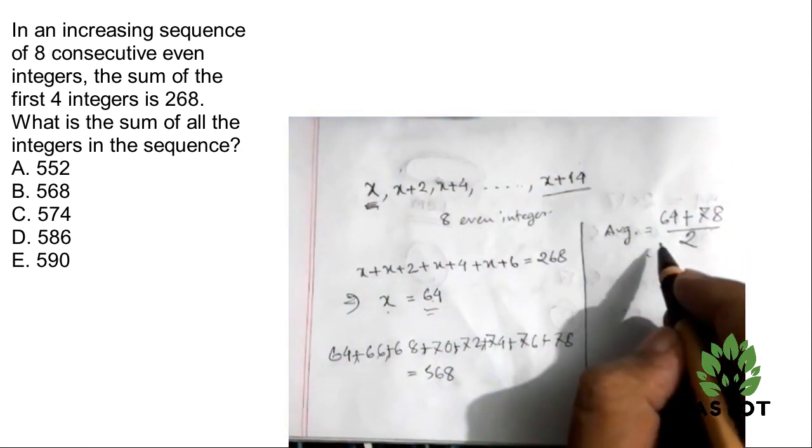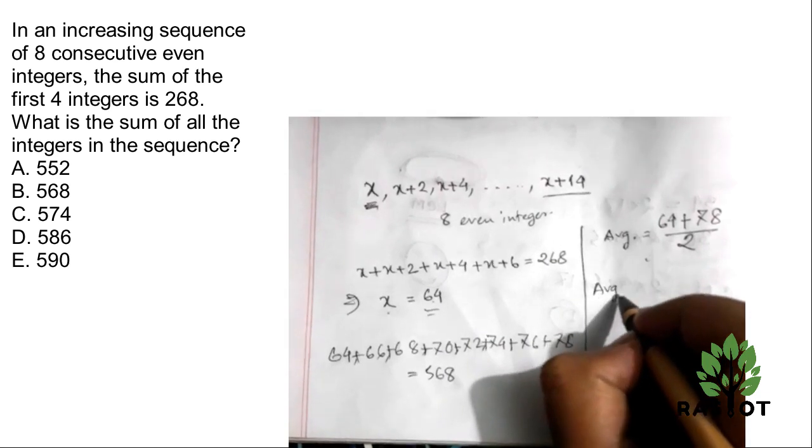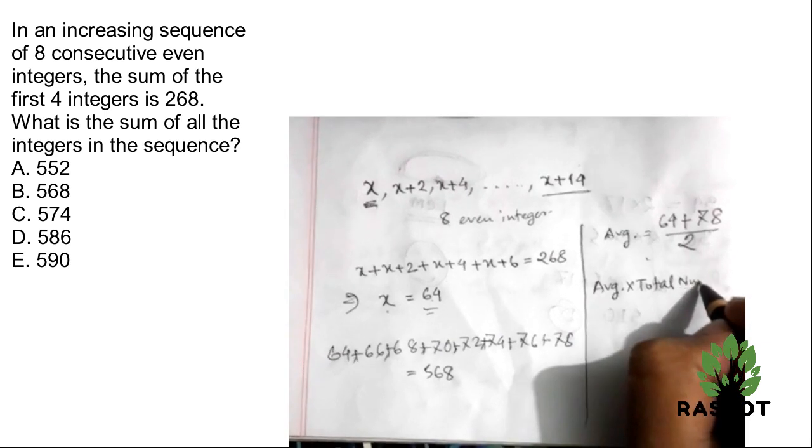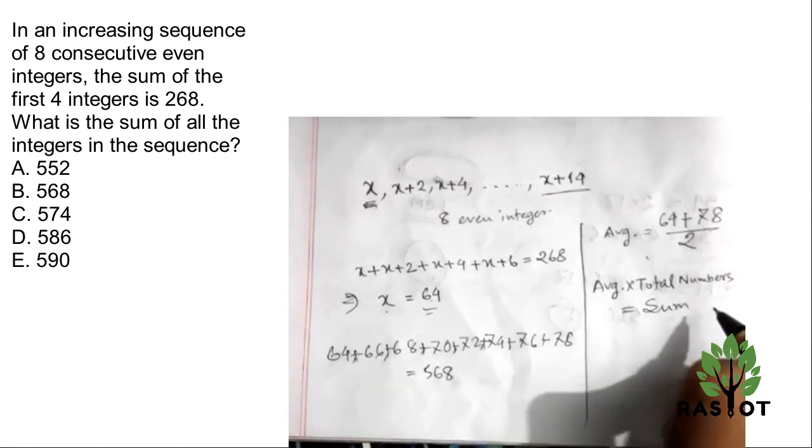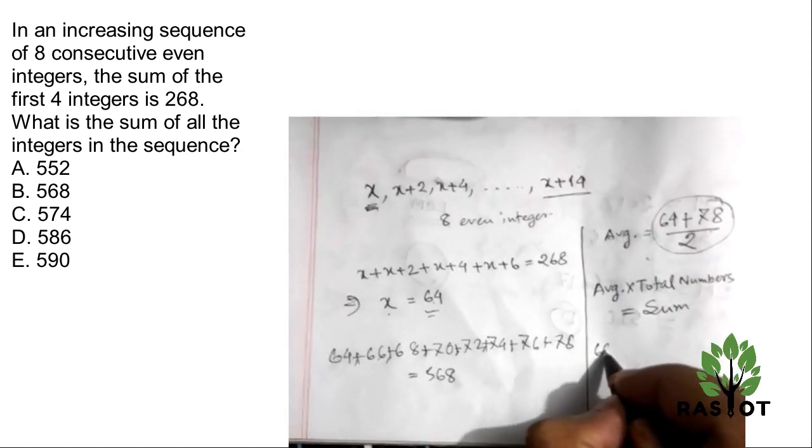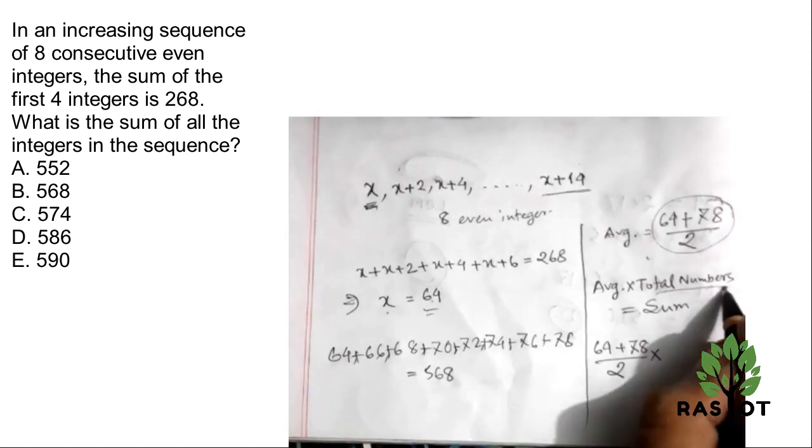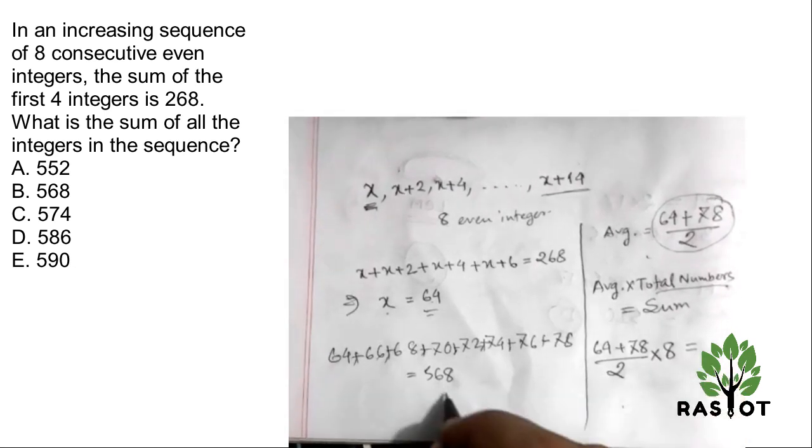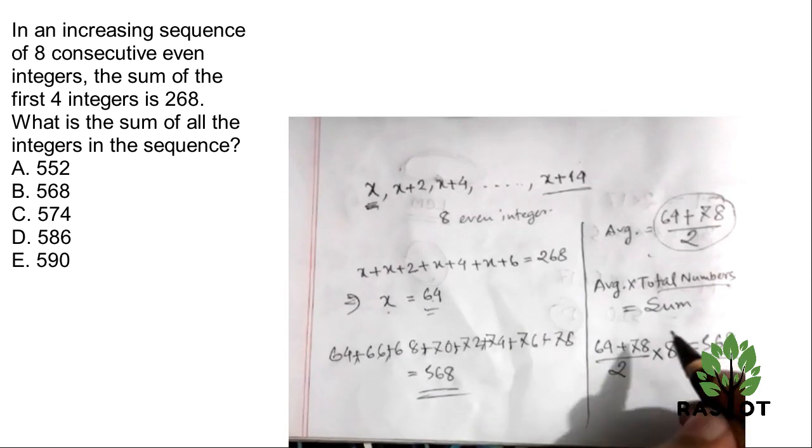Now we need to know the average is the total divided by total numbers. That is, the average is 64 plus 78 divided by 2, multiply by total number 8, that is 568.